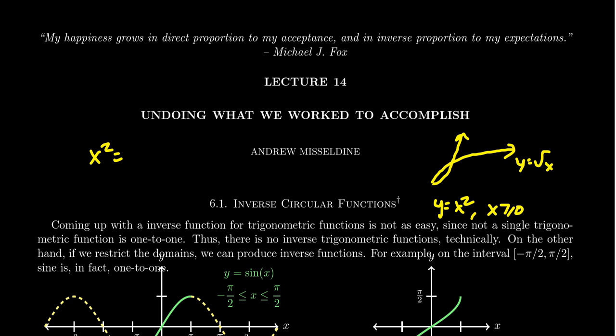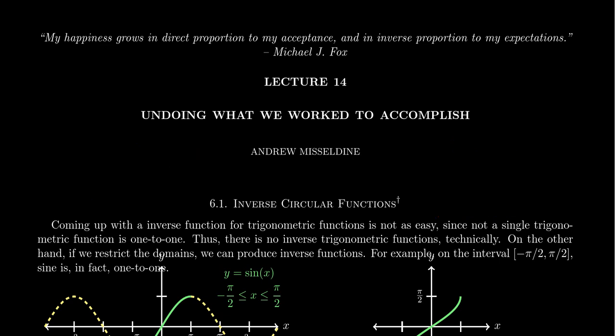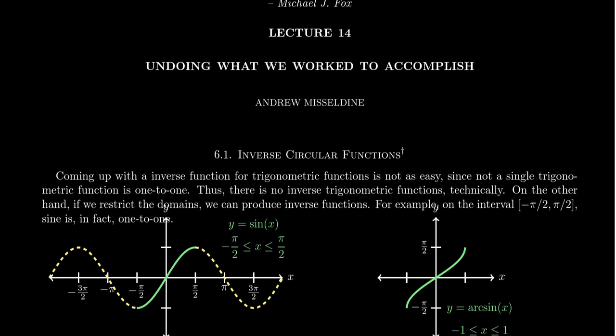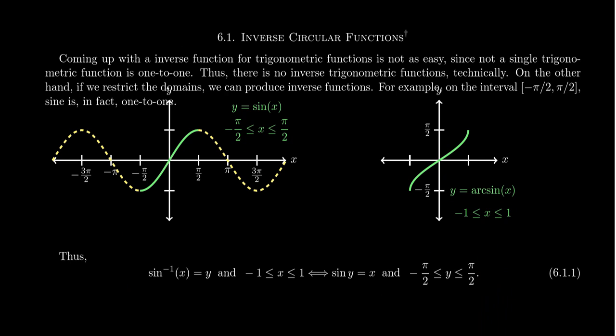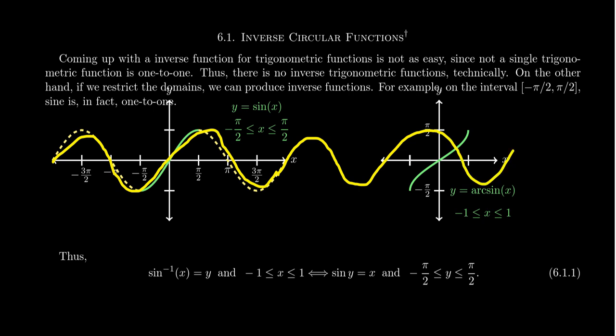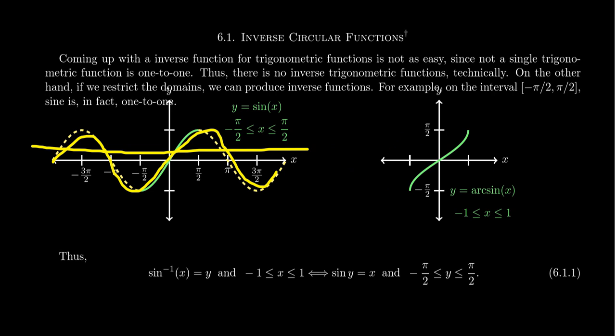The reason I bring this up is that when it comes to trigonometric functions, the same problem is present. Coming up with an inverse function for trigonometric functions is not easy, because not a single trigonometric function is one-to-one. You can see on the screen right now a typical sine wave. The sine function, being periodic, goes up and down forever. So if you analyze any section of this graph, it's not going to pass the horizontal line test — it's not a one-to-one function.